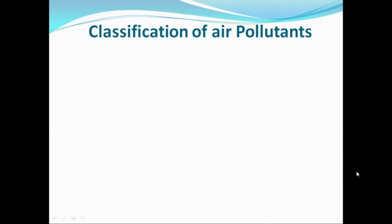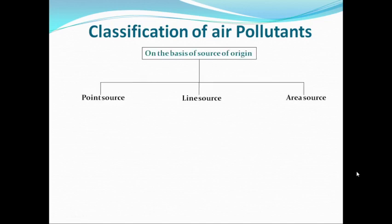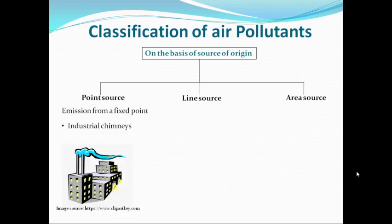We can classify air pollutants on the basis of different parameters into various categories. First of all, we'll see how we can classify air pollutants on the basis of their source of origin. On the basis of source of origin, we can classify air pollutants as point source pollutants, line source air pollutants, and area source air pollutants. If the air pollutants are coming to the environment from a fixed point or a fixed place, then all such air pollutants will be termed as point source air pollutants. The example in this category could be the air pollutants coming out of an industrial chimney.